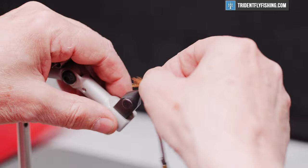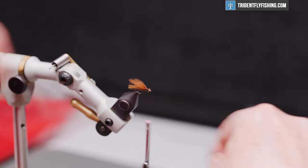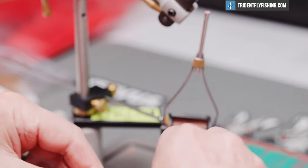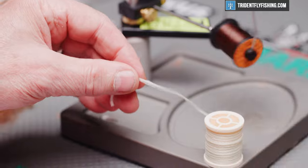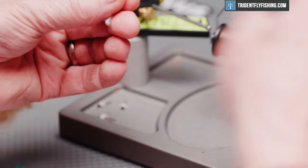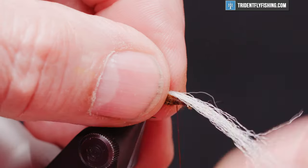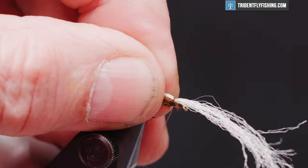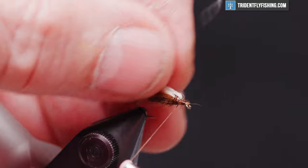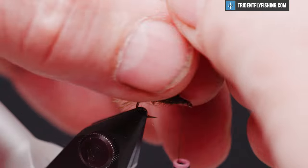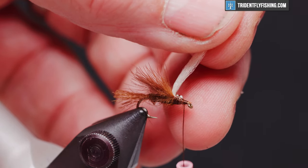It's a dark fly, kind of hard to see in the water, so we're going to add a little white antron to that as a sighter. I'm going to tie that in on top of the wing. More than I need, so we'll thin that out a little bit. Fold the material back, and we're going to cut that off to be half the length of the wing.